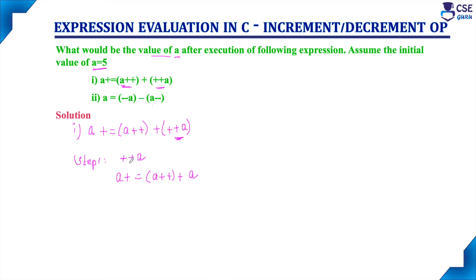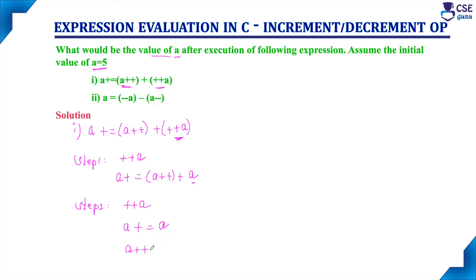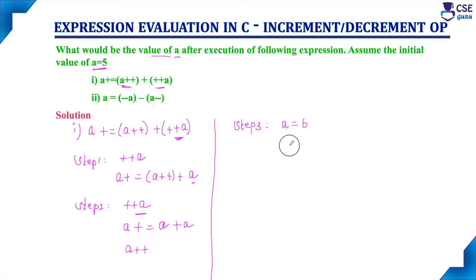For pre-increment, the value of the variable gets incremented by 1 first, and then the incremented value is used. Here the variable is A. So in step 3, the value of A gets incremented by 1. The given value is 5, so after incrementing, A becomes 6. For the pre-increment, the incremented value 6 is what will be used in the expression.